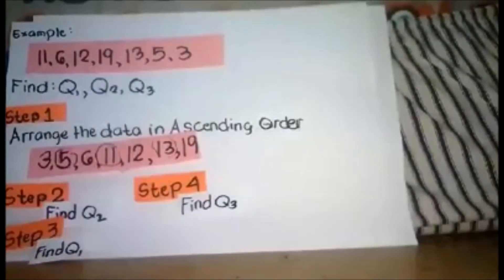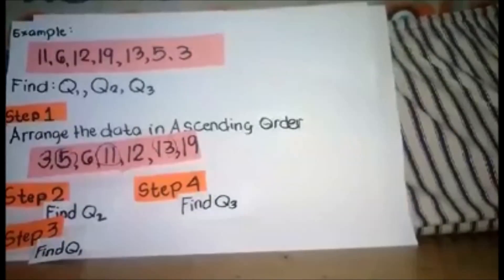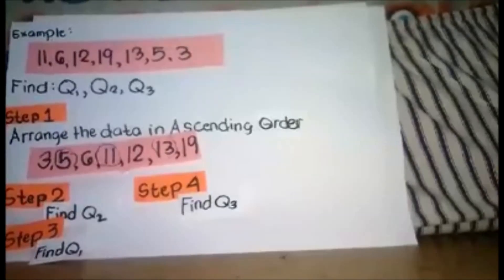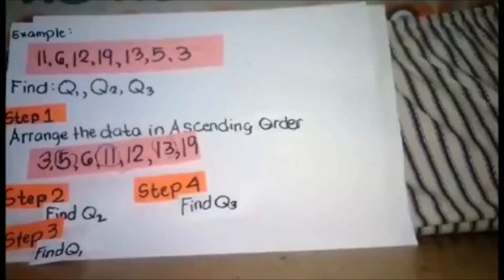Q1 is 5, our Q2 is 11, and our Q3 is 13. So do you have any questions? Yes. What if the total number of the given data is an even number? How can we find Q1, Q2, and Q3?